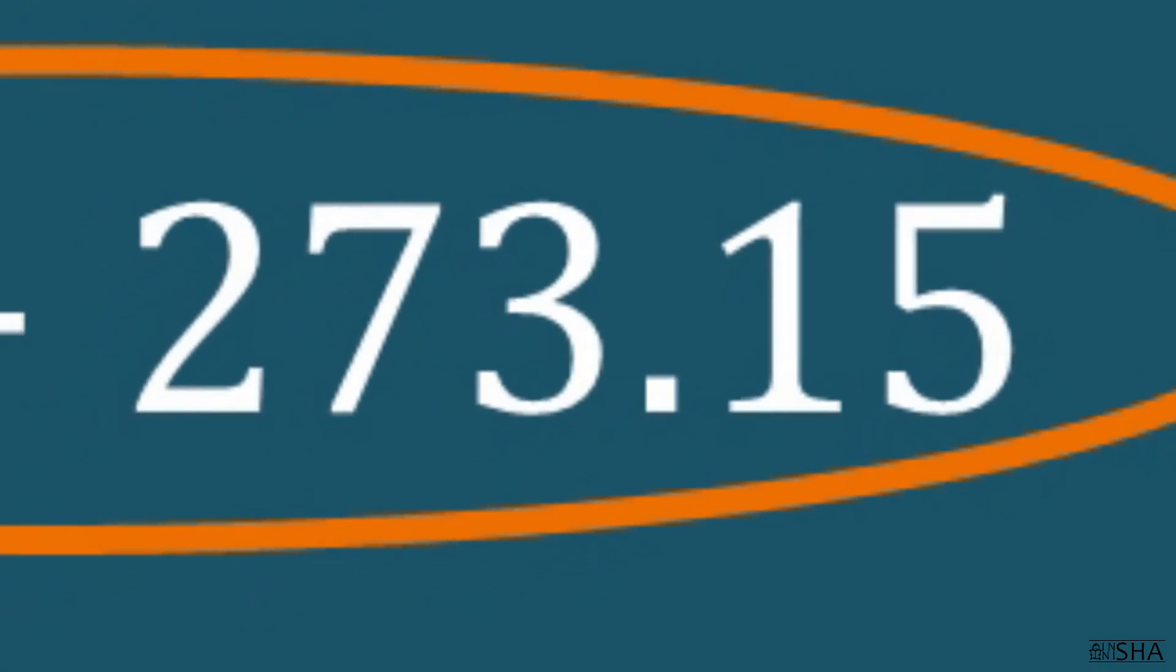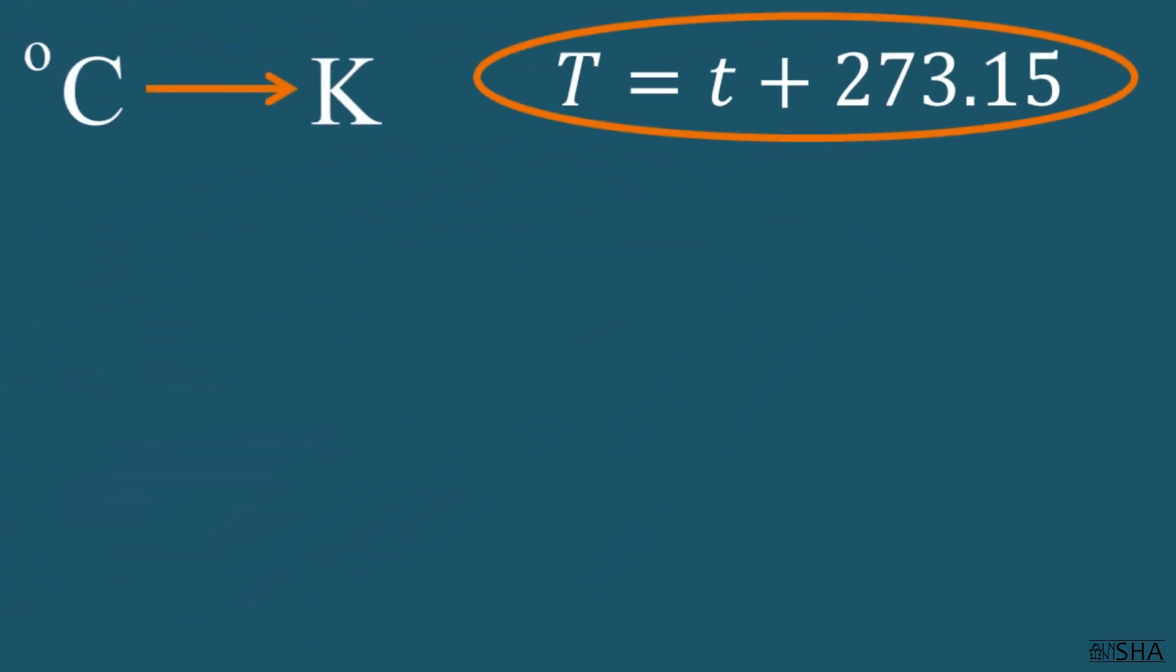You can round T₀ and use 273 in the formula. Negative 20 degrees Celsius, we'll convert to Kelvin: negative 20 plus 273 equals 253 Kelvin.